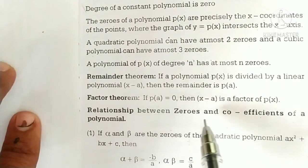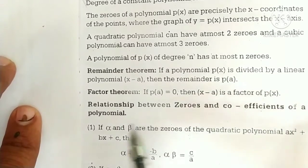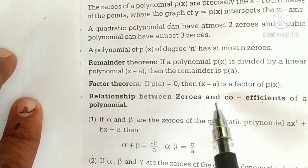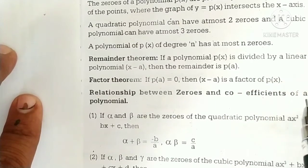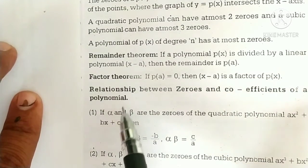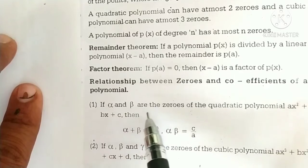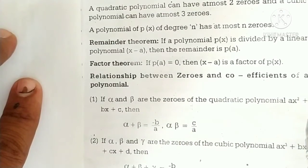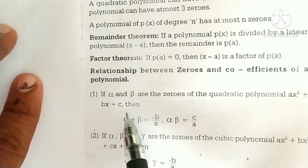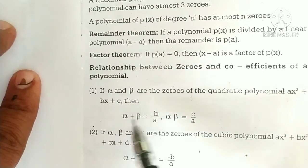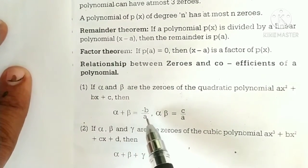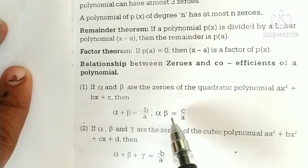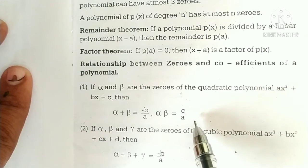Relationship between zeros and coefficients of a polynomial. If alpha and beta are the zeros of the quadratic polynomial ax squared plus bx plus c, then alpha plus beta is equal to minus b by a, and alpha into beta is equal to c by a.